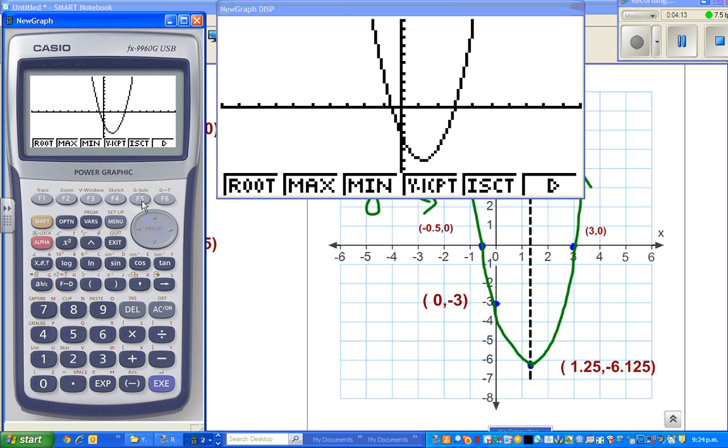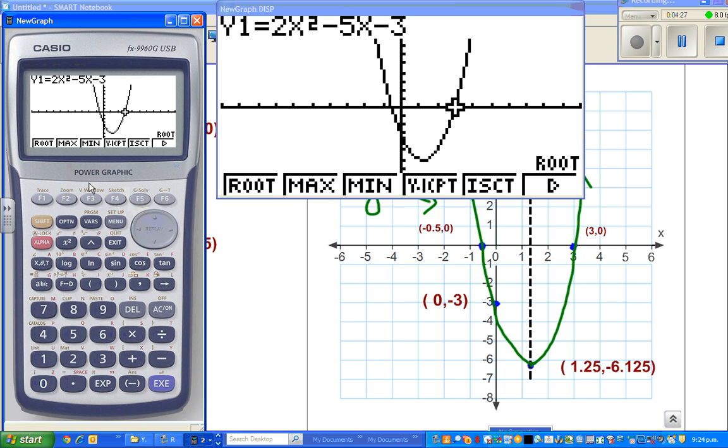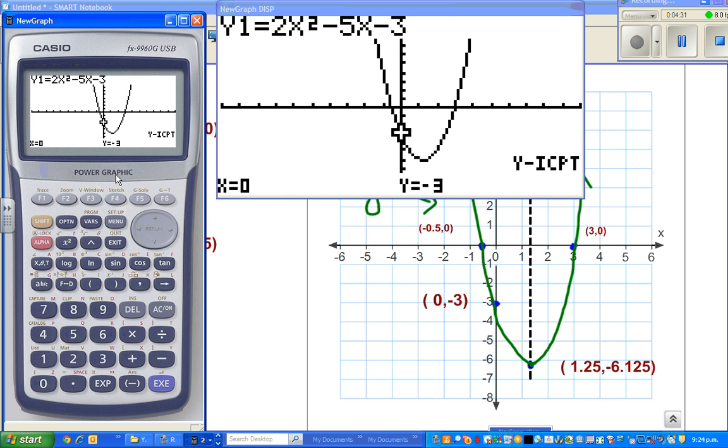So now you go gsol, let us do the x-intercept, which is the root. Root negative 0.5, and the next is 3, 0. So now gsol, and you want to find the y-intercept, that is f4, that is 0, negative 3. And finally the vertex, which is the minimum here, that is 1.25, negative 6.125.